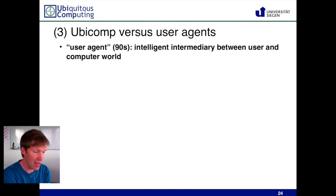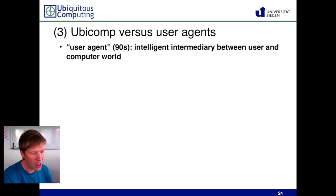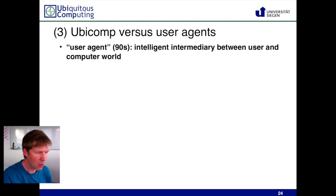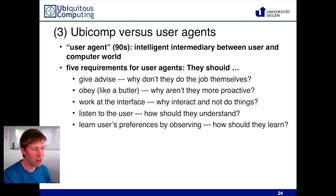Finally, there were user agents. At the time, lots of software featured them — the most well-known example is in Microsoft Word, where you had this animated paperclip popping up suddenly as you were trying to do something, offering you help. You could change it into a puppy or another representation, but these were typical user agents: intermediate entities between the user and the software. People were investing a lot of research into them. One example was the paperclip popping up to say, 'It seems like you're trying to save your document, would you like me to help?'